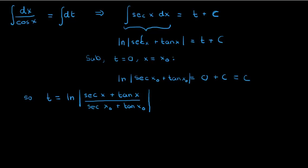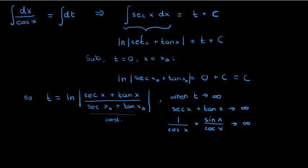But we still need to check what happens when t approaches infinity. So when t approaches infinity, the denominator in the ln expression is just a constant, meaning the numerator has to approach infinity. So we just have secant x plus tangent x going to infinity. Now I can rewrite these trigonometric ratios in terms of just sines and cosines: 1 over cosine x plus sine x over cosine x approaches infinity. Now this happens when the denominator, which is cosine x in both cases, approaches zero, which occurs for x equals odd integer multiples of π/2. So π/2, 3π/2, 5π/2, and so on.